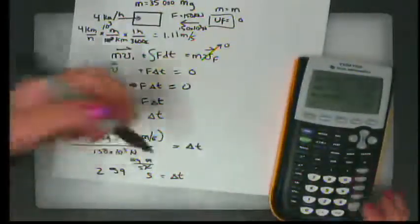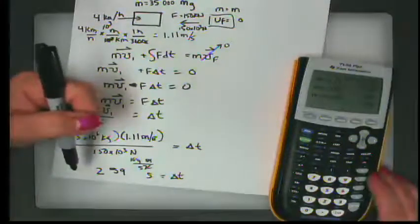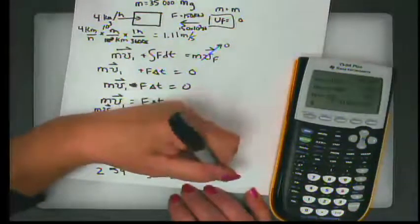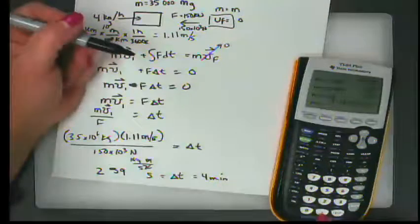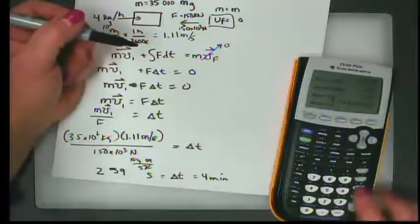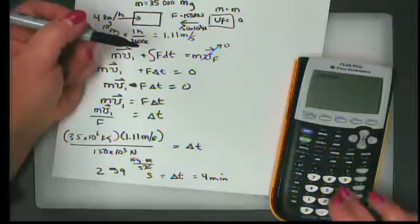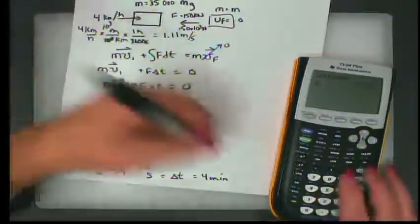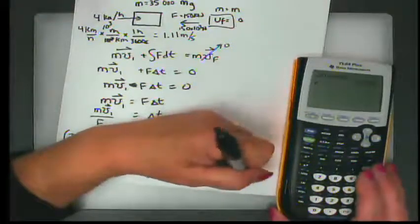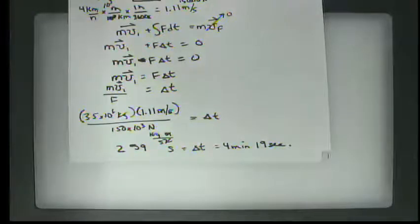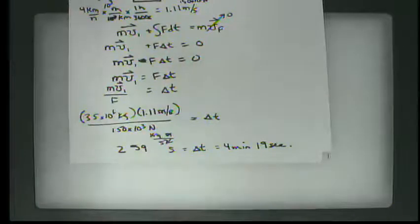Converting to minutes: there are 60 seconds per minute, so that's 4 minutes and 19 seconds — or just 259 seconds, either one. It's a good problem, very rooted in momentum and impulse.